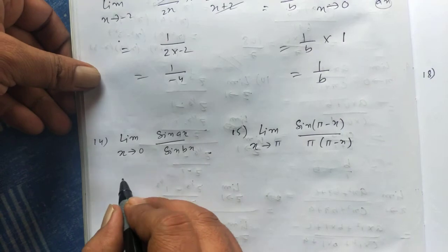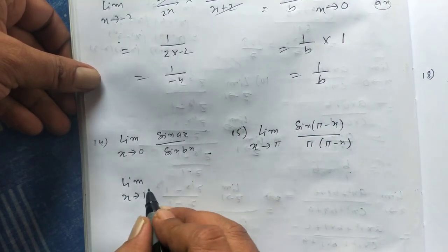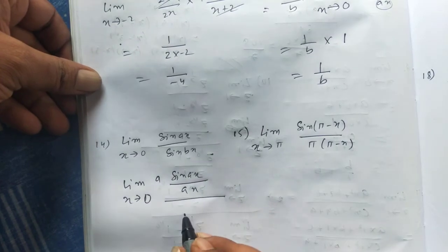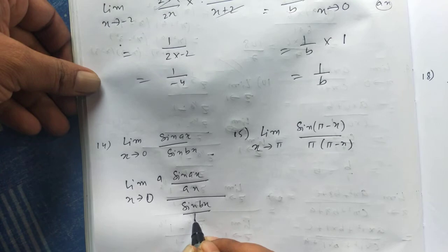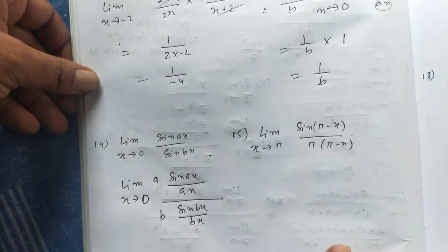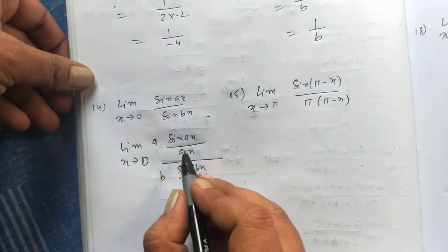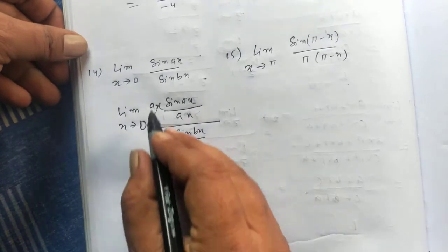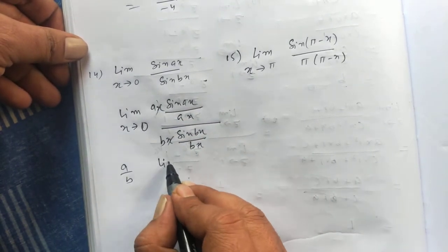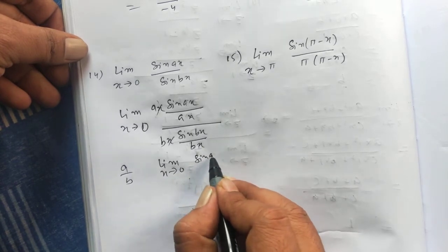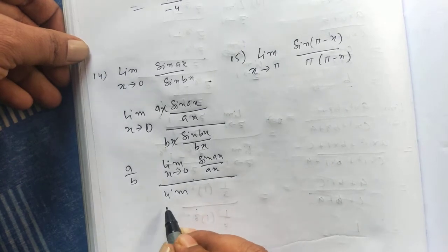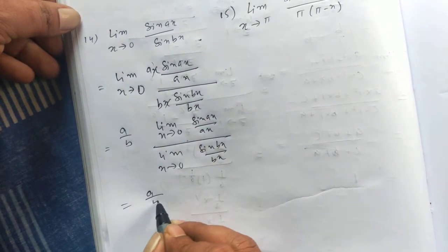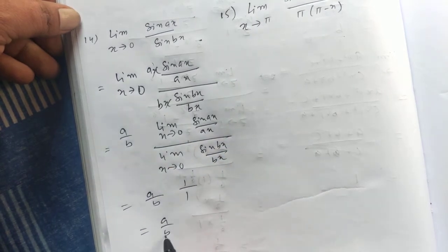Similarly for sin(ax) / sin(bx): limit x tends to 0. We write sin(ax)/ax times ax, divided by sin(bx)/bx times bx. The x's cancel, and we get a/b out front. Then limit x→0 of sin(ax)/(ax) = 1 and limit x→0 of sin(bx)/(bx) = 1, so the answer is a/b.